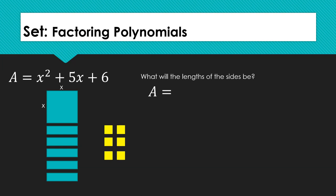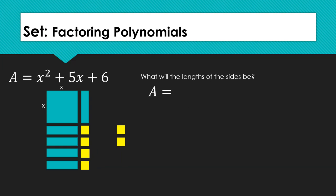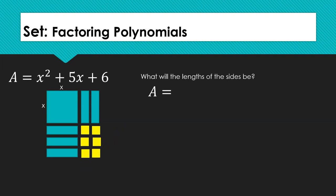If we were to place all 5 of the rectangles below the large square, we wouldn't be able to use the 6 small squares to complete the rectangle. If we move one of the rectangles to the right side of the large square, we have 2 small squares left over. If we move another rectangle to the right side of the large square, we can complete the rectangle using all of the small squares. Now we can label the outside of the entire rectangle to get the linear factors. We find that the linear factors are x plus 2 and x plus 3.